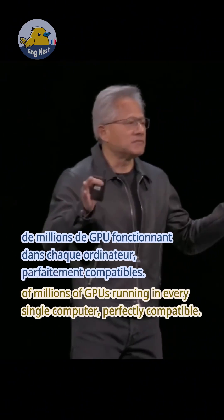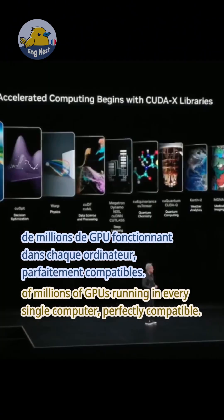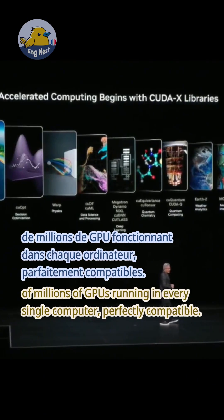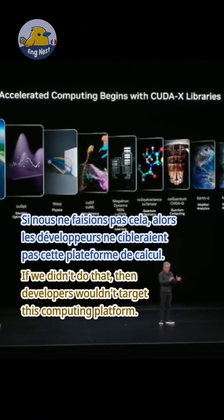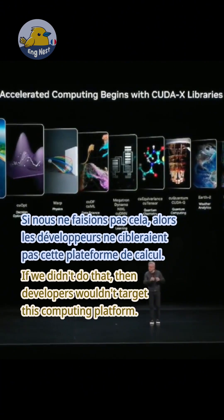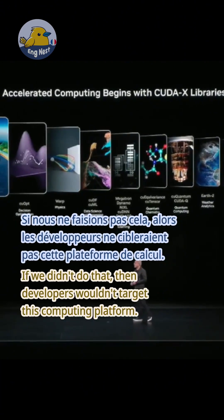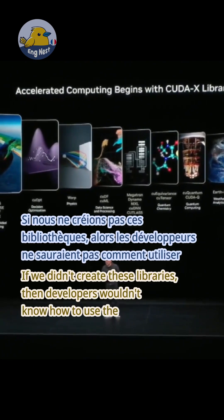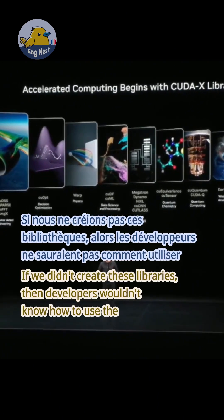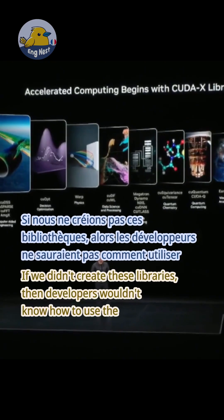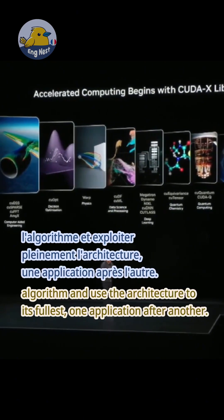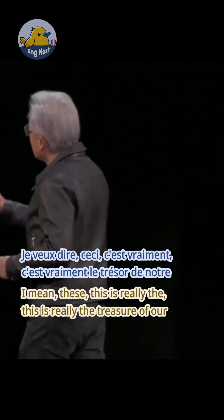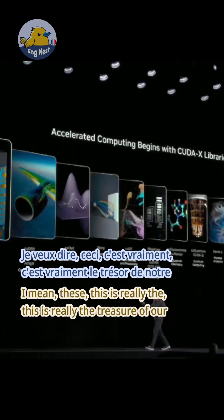Hundreds of millions of GPUs running in every single computer, perfectly compatible. If we didn't do that, then developers wouldn't target this computing platform. If we didn't create these libraries, then developers wouldn't know how to use the algorithms and use the architecture to its fullest, one application after another.